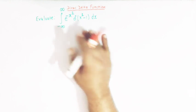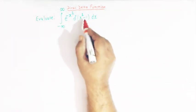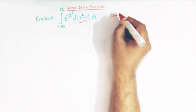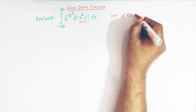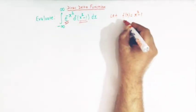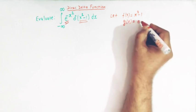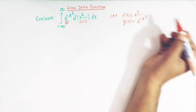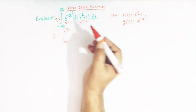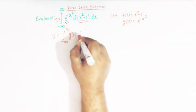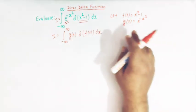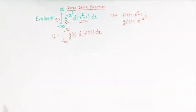Here we have a quadratic function inside the Dirac delta function notation. So what we will do is take this quadratic function as f of x. So we have f of x equal to x square minus 1, and we take g of x as the Gaussian function, that is e raised to minus x square. Our integral can then be written as the integral from minus infinity to infinity of g of x, delta of f of x, dx.